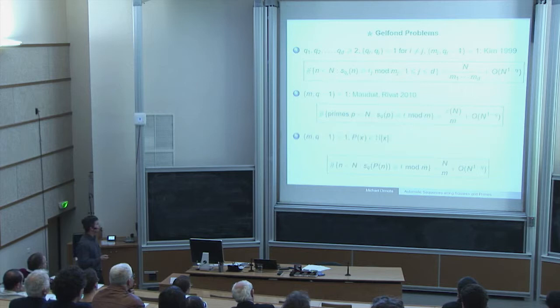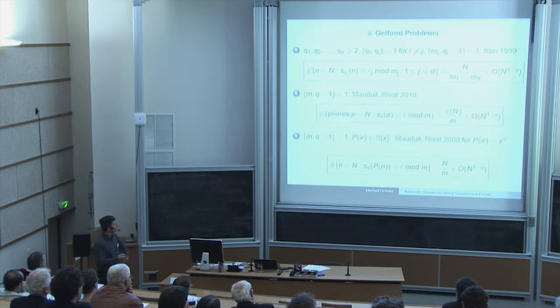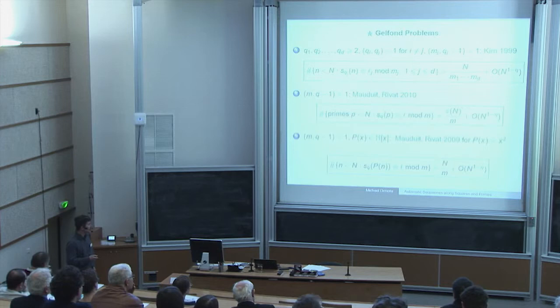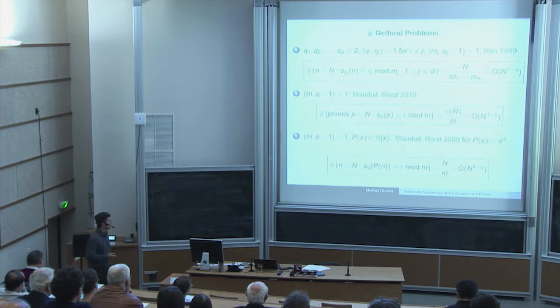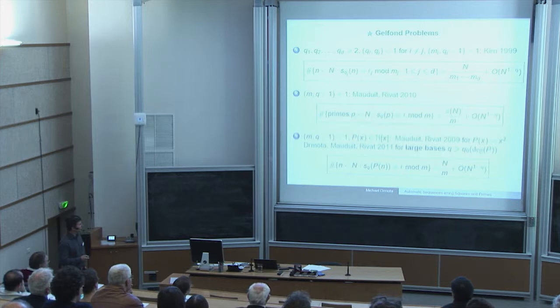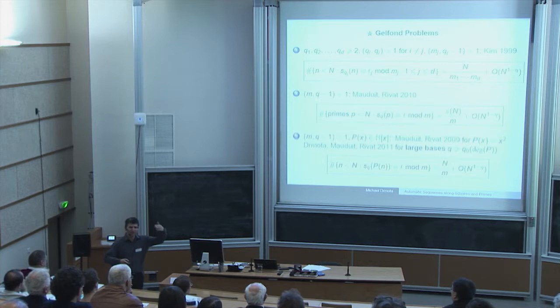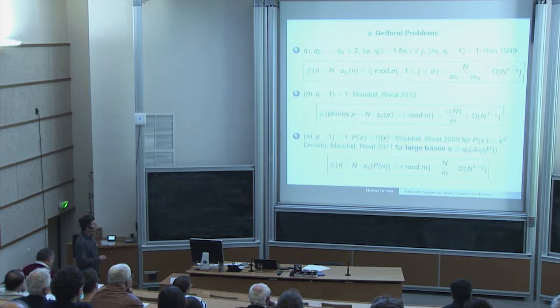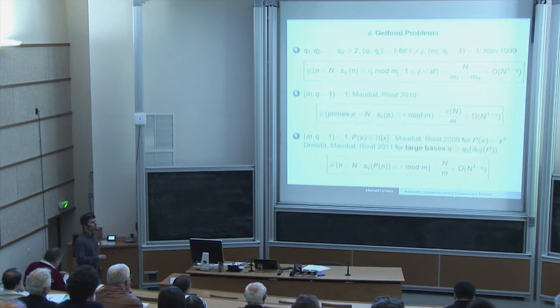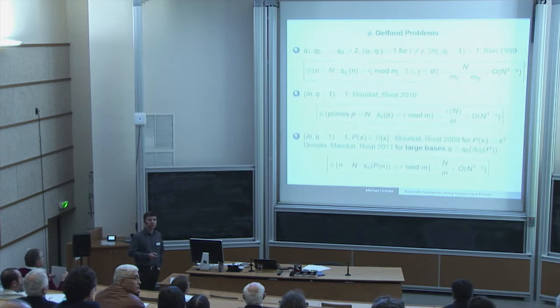The third conjecture was on polynomial subsequences, for example squares or cubes. For squares, it was proved by Mauduit and Rivat. For polynomials of higher degree, we only have a partial solution: if the base is sufficiently large — for degree 3, the base should be at least around 700, and this grows very quickly. Nevertheless, it indicates that this conjecture should be true, even if it's not completely proven now.